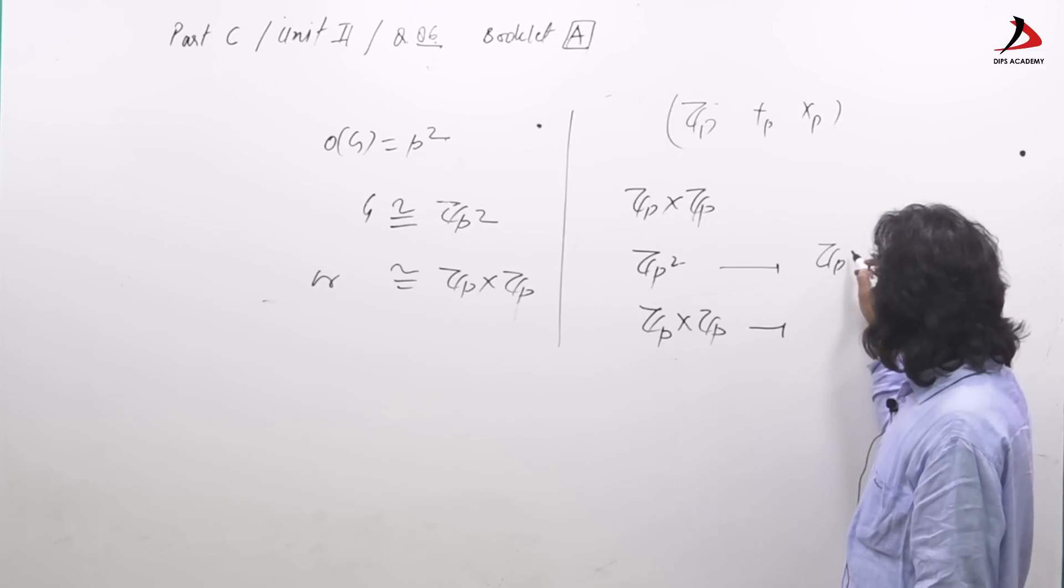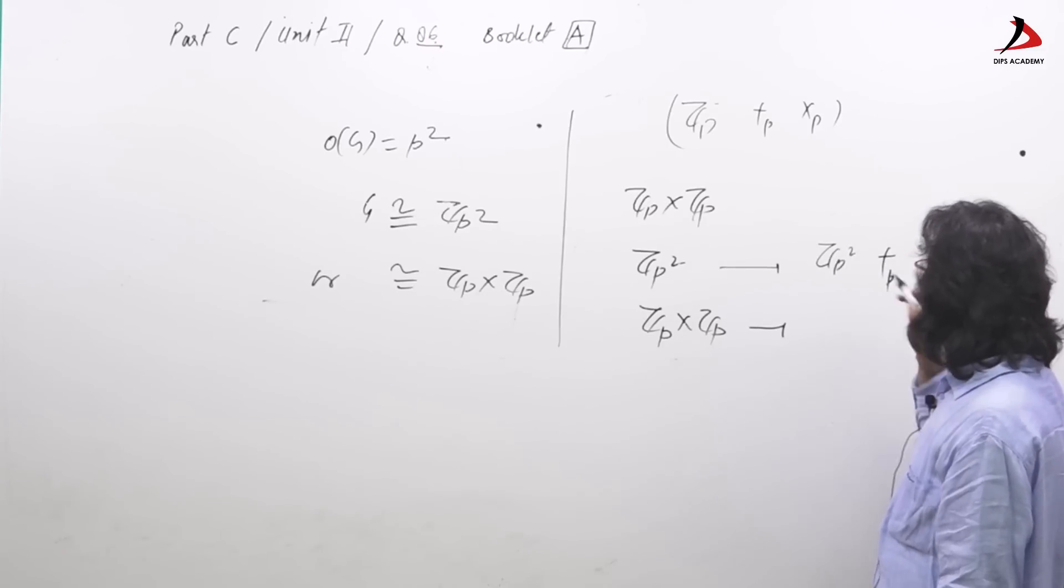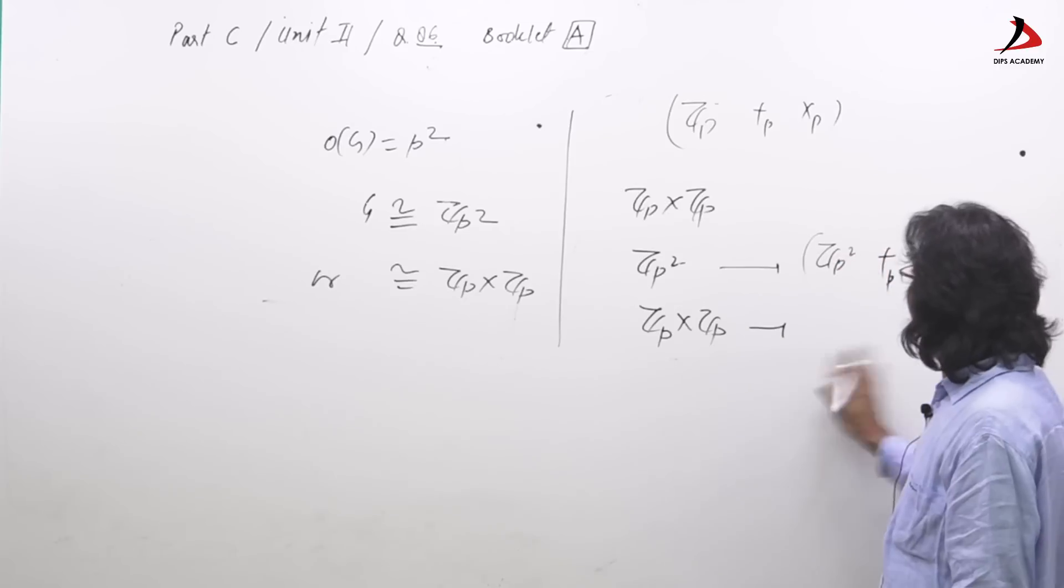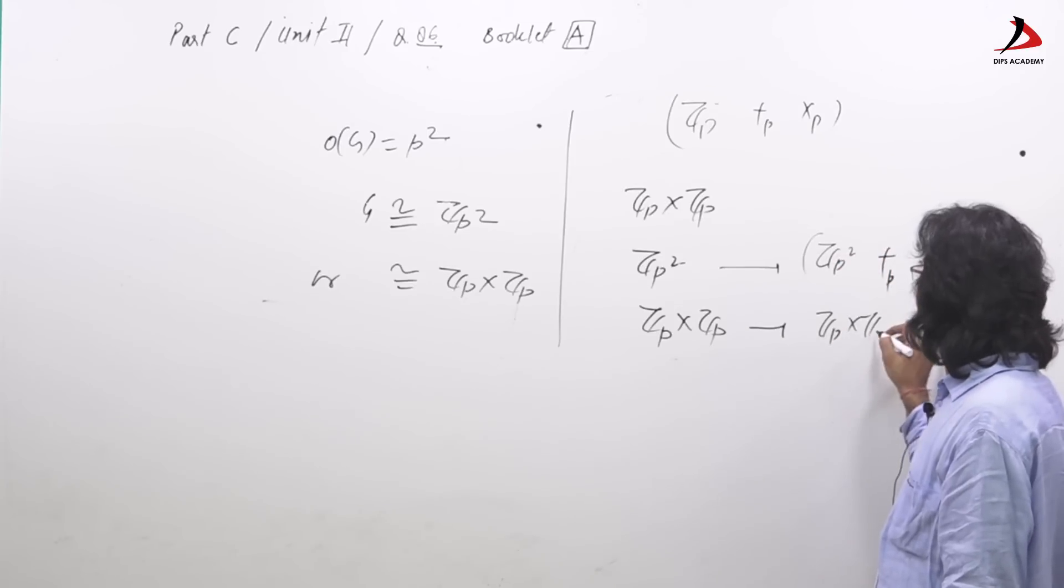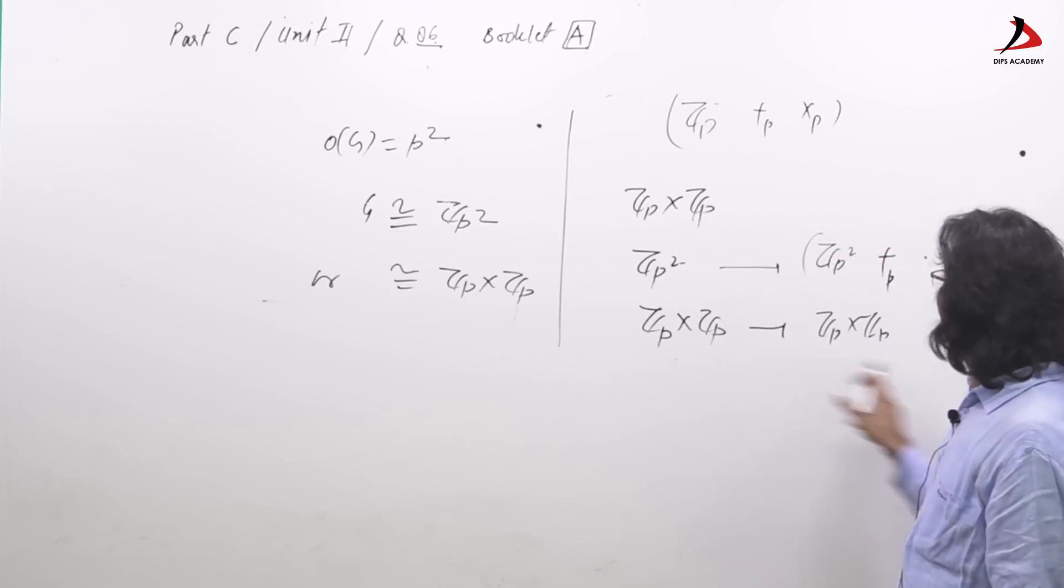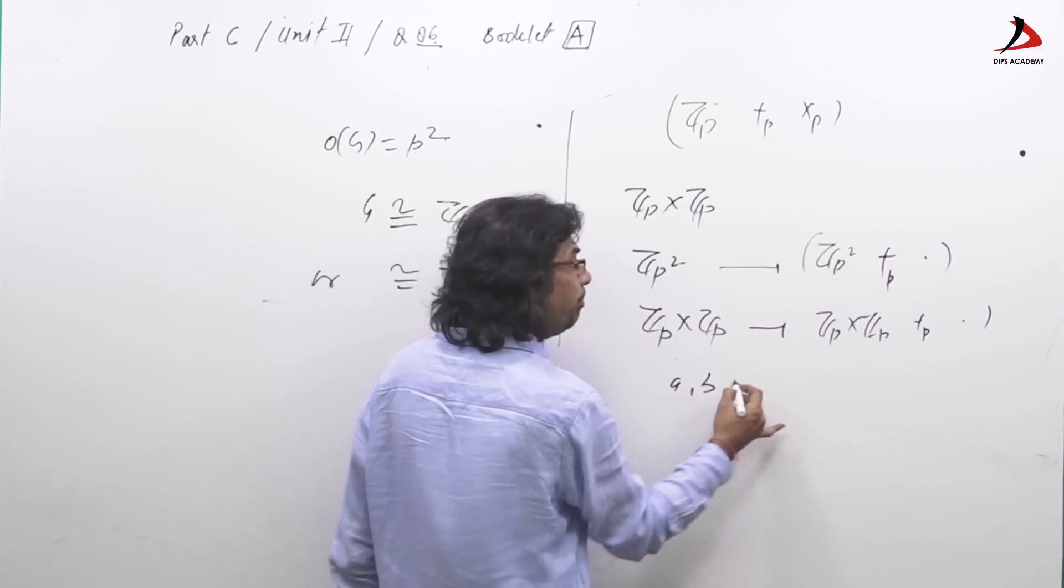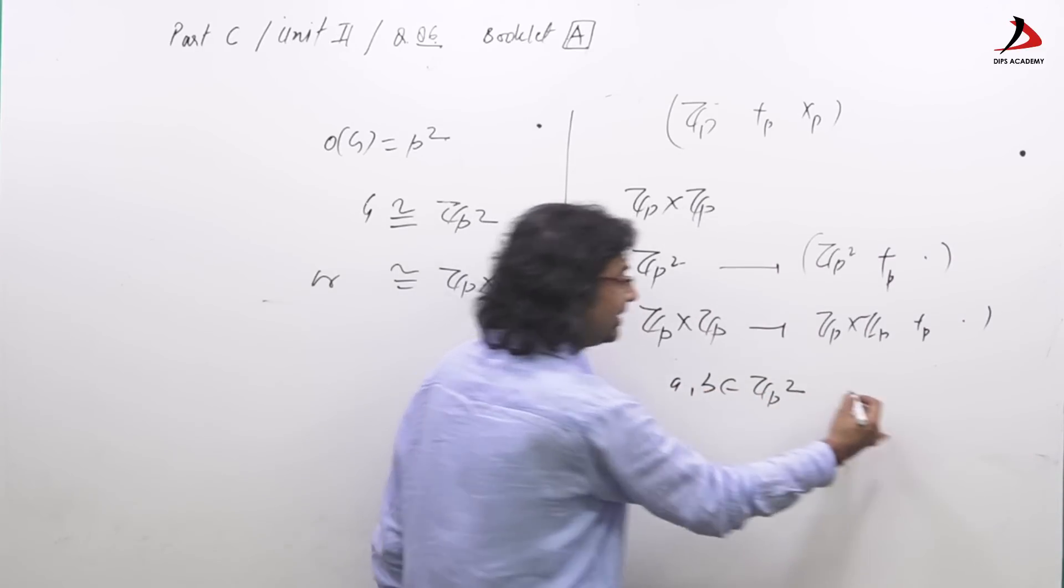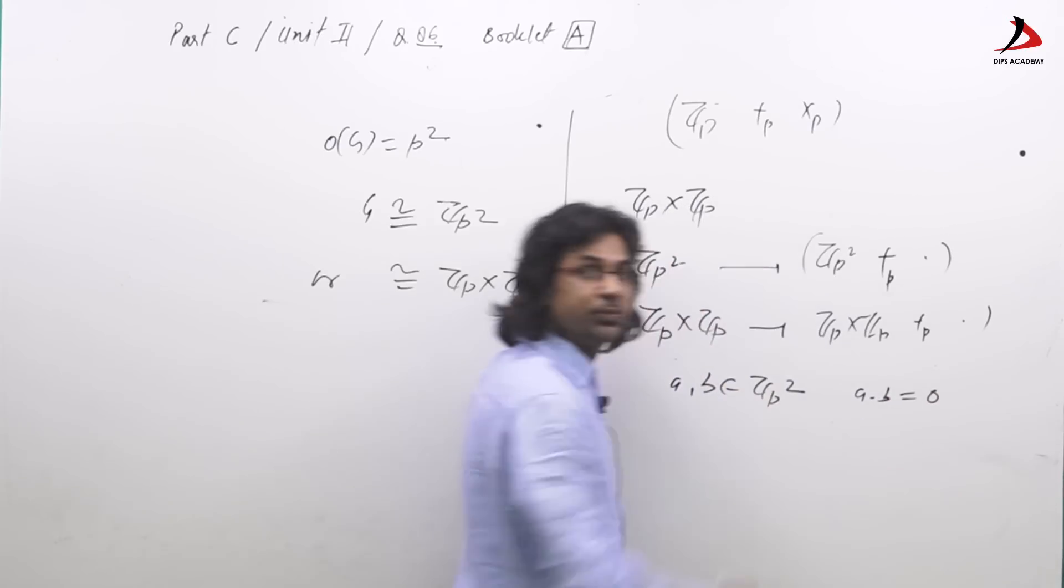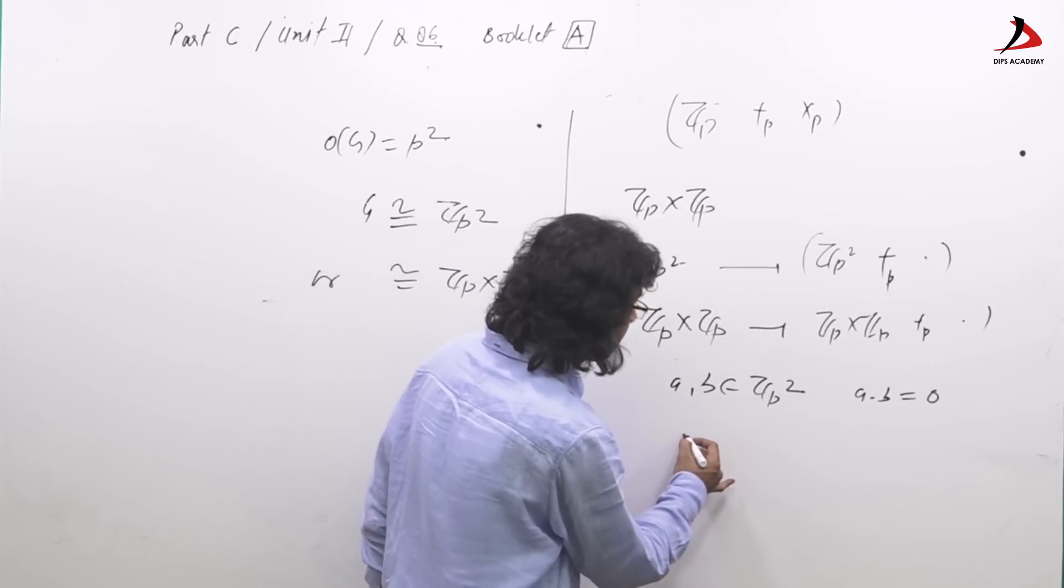What we do? We take this operation P square this and this dot Z_P cross Z_P, that again that same addition and then dot. What is dot here? A comma B belong to Z_P square then A dot B is defined as zero, called similarly here.